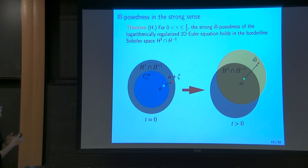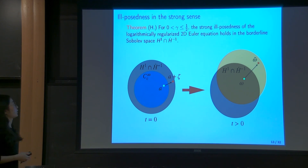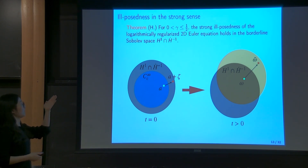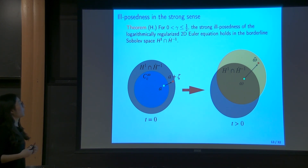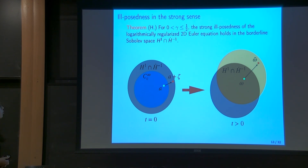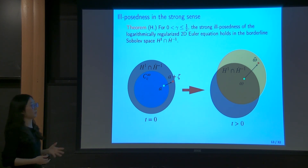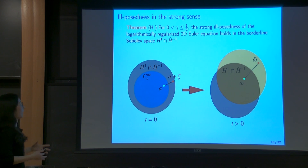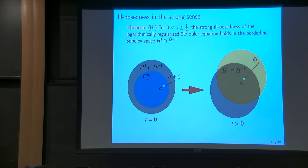Now let's talk about our main results. The main theorem can be summarized as follows: when gamma is in the intermediate region, we have the strong ill-posedness of this regularized model in the borderline Sobolev space. What is strong ill-posedness?